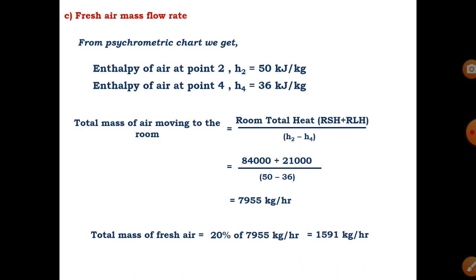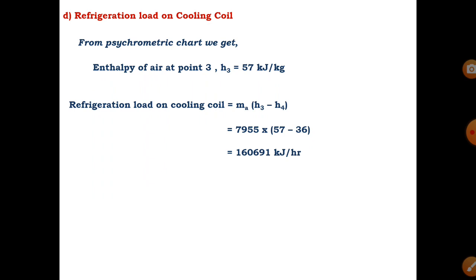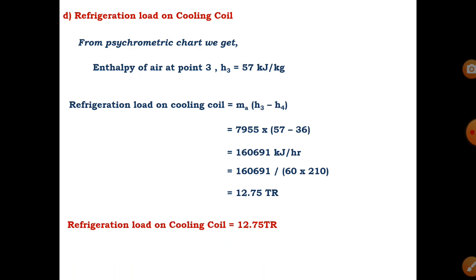Fresh air mass flow rate is 1,591 kg/hr. For the last part, calculate the refrigeration load on the cooling coil (process 3 to 4). The total mass of air through the cooling coil is 7,955 kg/hr (sum of fresh and recirculated air). Refrigeration load = mass × (H3 - H4) = 1,60,691 kJ/hr. Dividing by 60 and 210 converts to tons of refrigeration, giving a cooling coil refrigeration load of 12.75 TR.